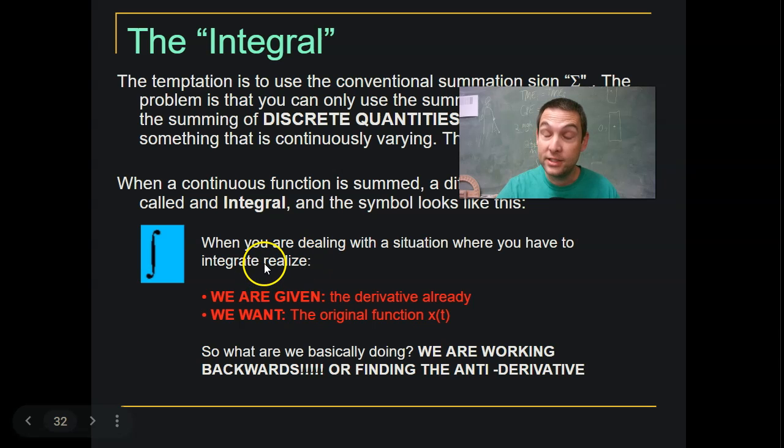we realize we are given the derivative already, but we want the original function. So what are we basically doing? We're going backwards or we're finding the anti-derivative. So we're given the answer and we need to figure out what was that original function. That's what we're doing.